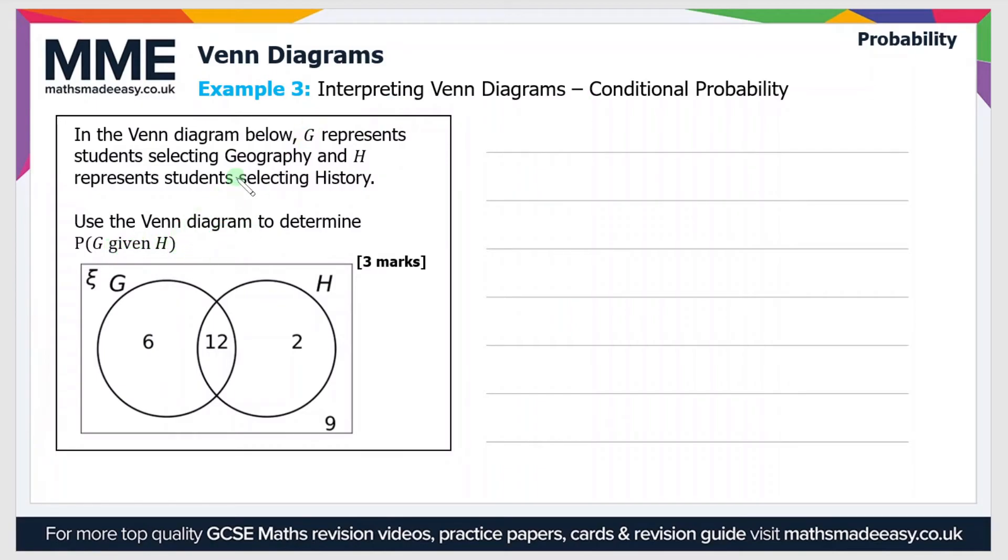So what does that mean? It means the probability that a student takes geography given that we know that they're taking history. So that means we're only thinking about people that take history.